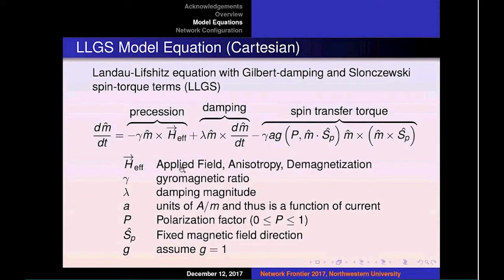H effective is the applied field that is applied to the magnetic material. Then, there are different ways that we can also introduce the damping of the electron. This particular form is called Gilbert Damping.